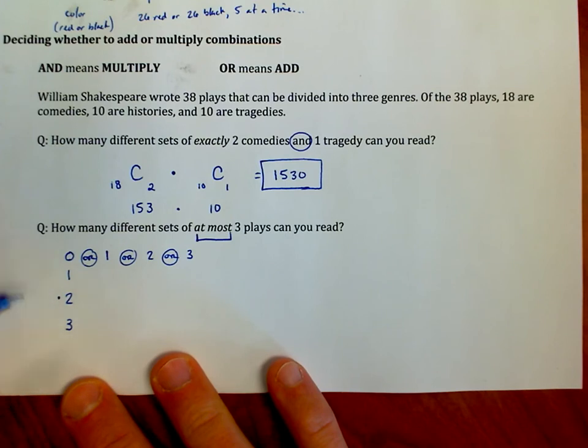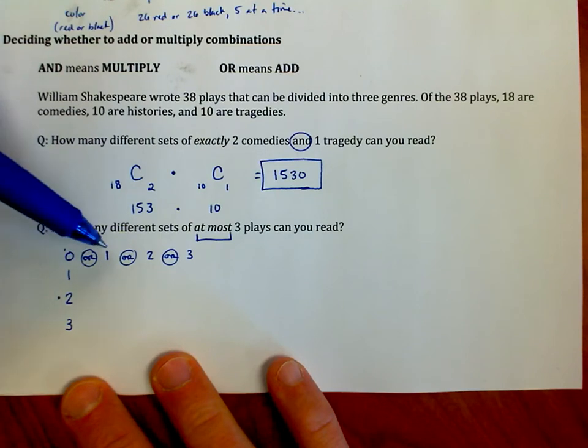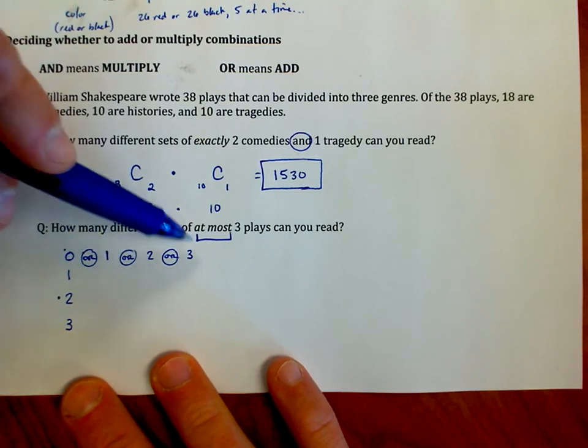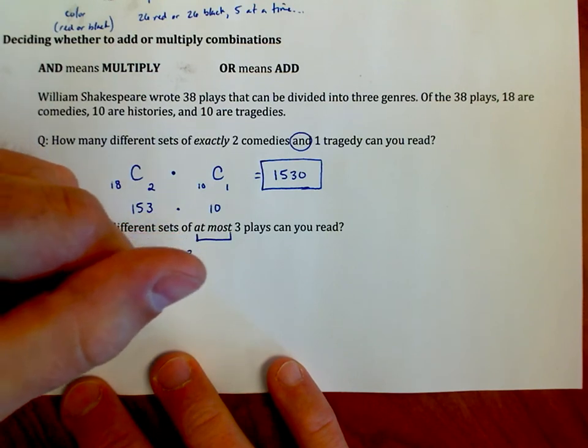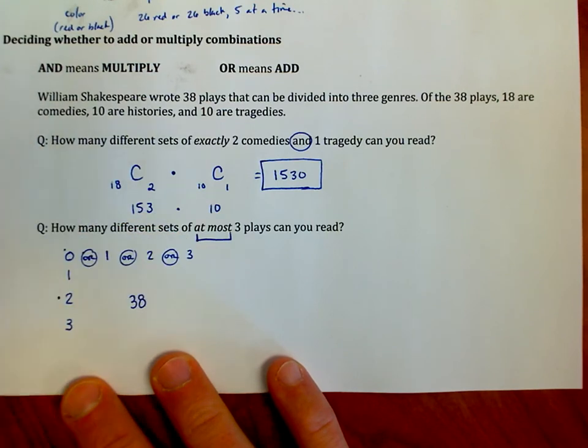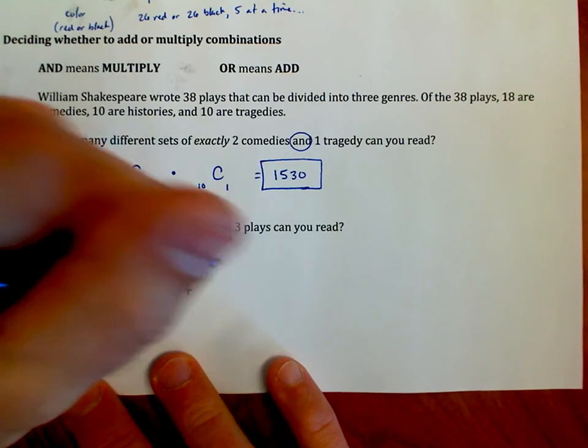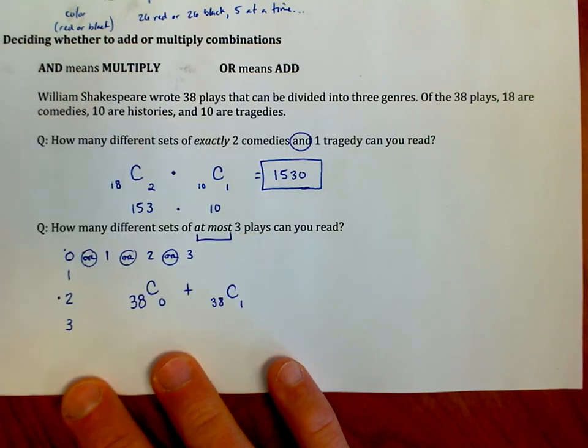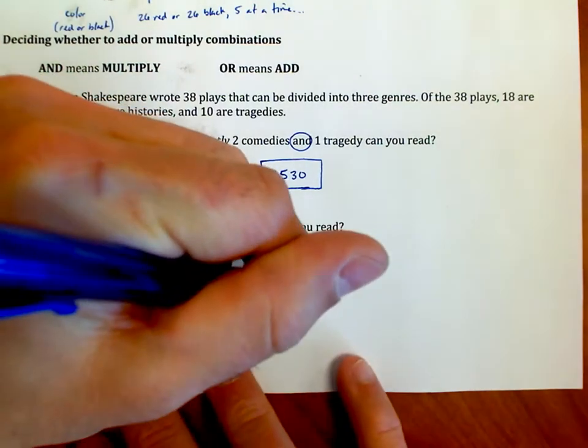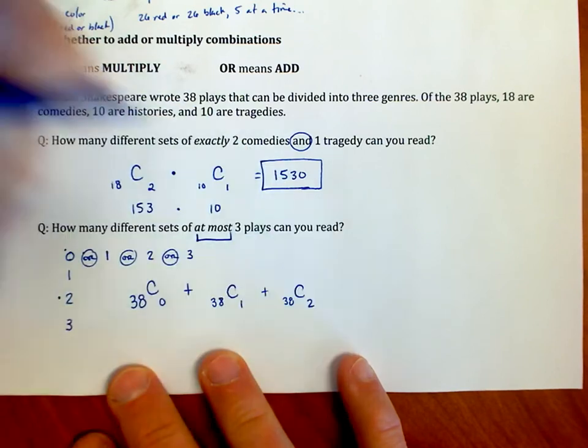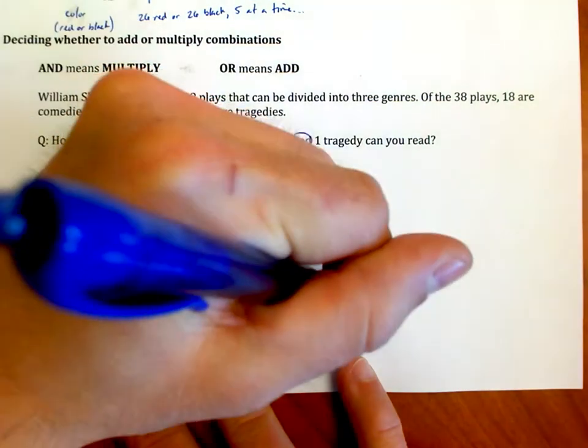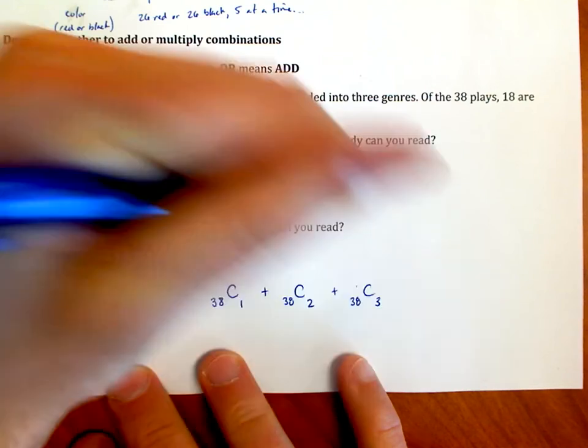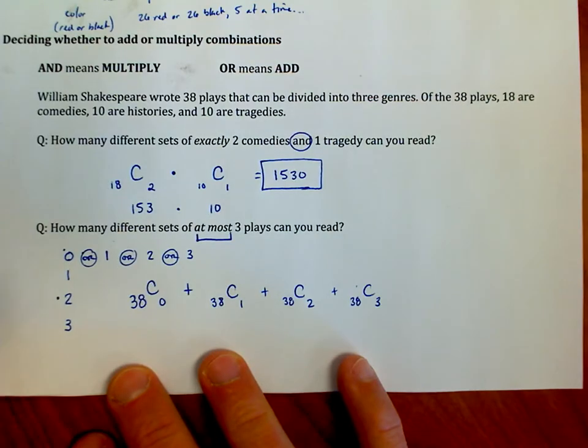That means what I'm going to do is I'm going to find how many ways I can read zero. I'm going to add it, because it's or. Or means add. I'm going to add it to the possibility of reading one, and then two, and then three. So it's going to look something like this. 38 plays to choose from. I'm going to choose zero at a time. I'm going to add in the number of ways that I can read one play. I'm going to add in the number of ways that I can read two plays. I'm going to add the number of ways that I can read three plays. I'm going to add these values together.